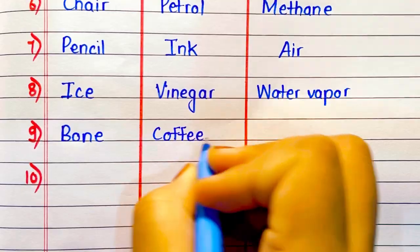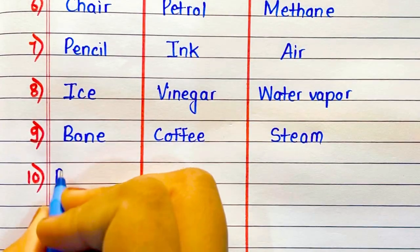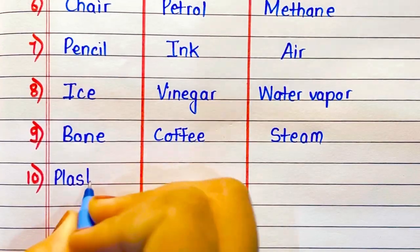Number 9. Solid, bone. Liquid, coffee. Gas, steam.